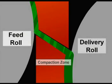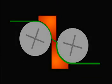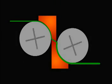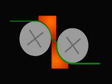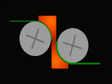Overcompaction will result in a corrugated appearance. Note how the fabric coming out of this machine is slightly thicker than the fabric going in.